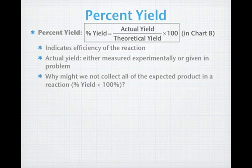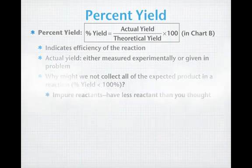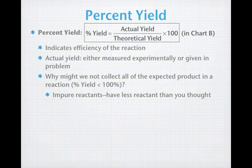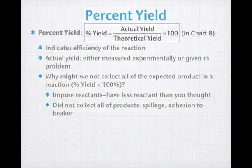Now let's talk about some reasons why we might not collect, why the percent yield might not be 100%. So if it's less than 100%, what might happen to cause the reactant not to go completely? One possibility is that you had impure reactants. If everything in your reactants is not what you think it is, you have less reactant than you thought, then you're going to get less of a yield than you think you should get. Another possibility is that you did not collect all the products. Sloppy lab techniques, spilling, sometimes you get adhesion of the product to the beaker, and all of these can cause your collection to be less than 100%.